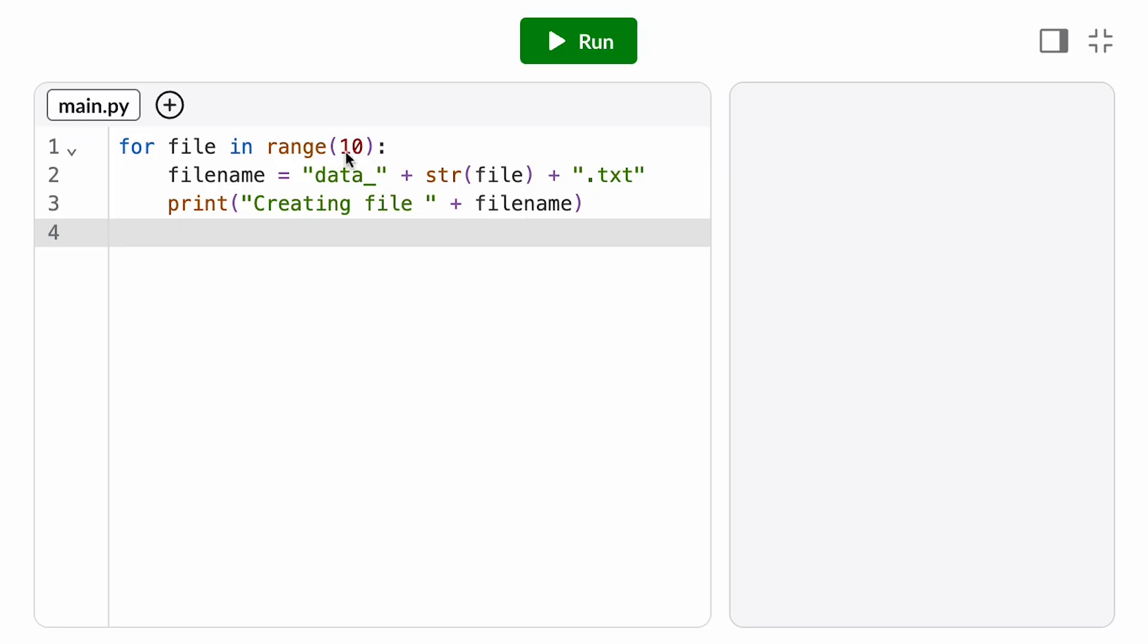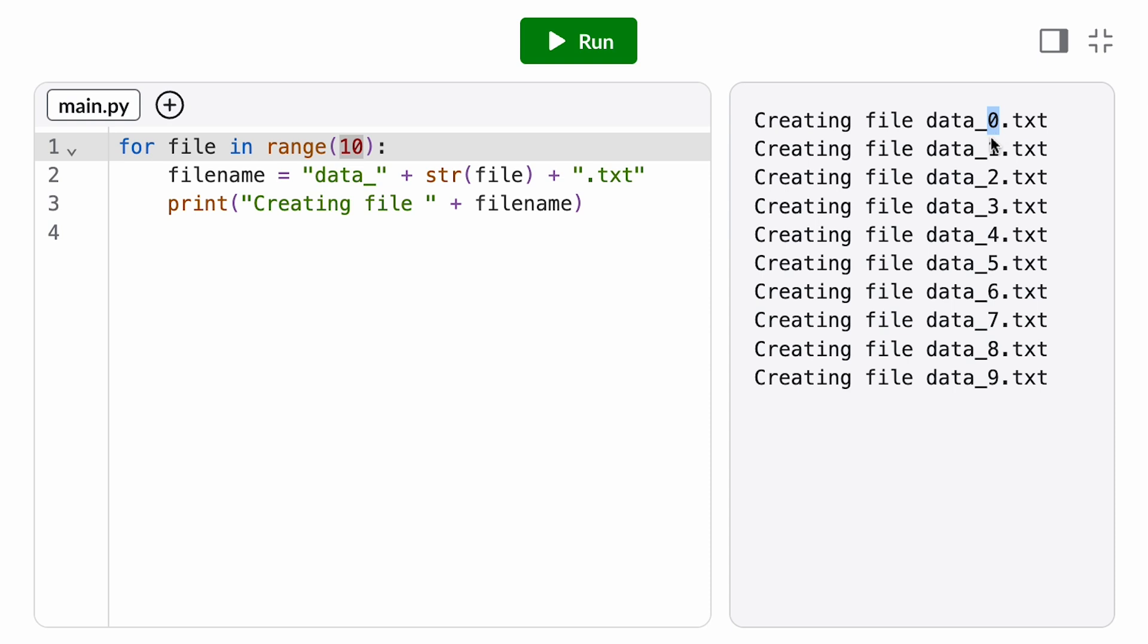Okay, but what if I want my loop variable to start at a value that's not 0? The range function can optionally take another argument to specify the start. If we don't include it, the start value just defaults to 0.